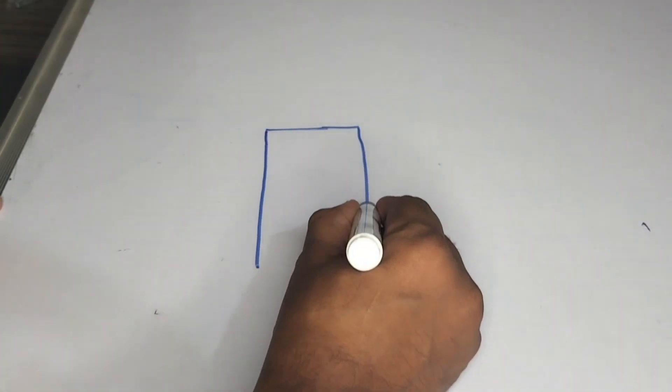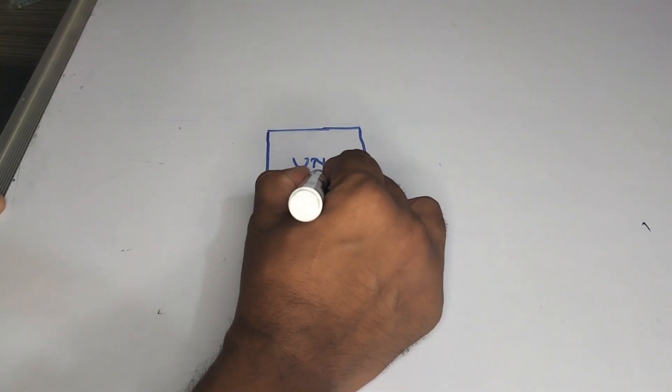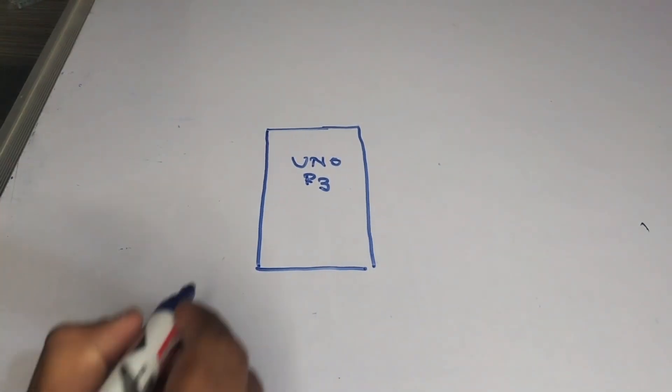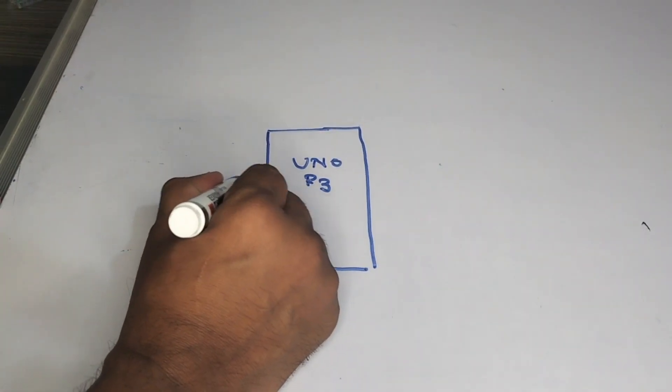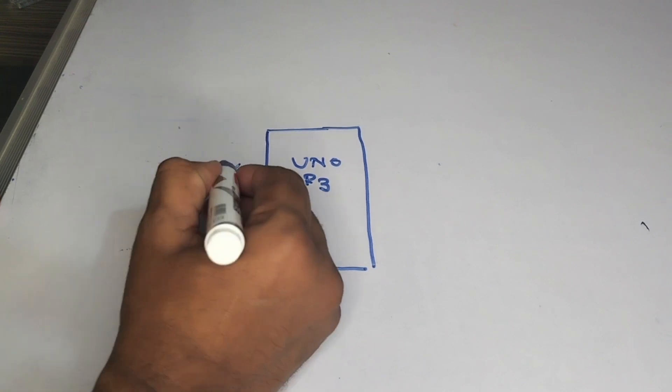Connections, friends. For this one, I first of all need to take the Arduino Uno. So this is the Arduino R3, which typically has the 5 volts and the ground.